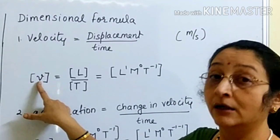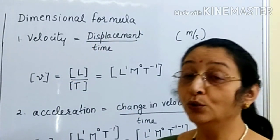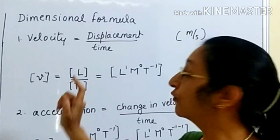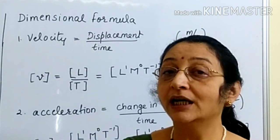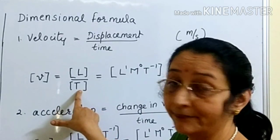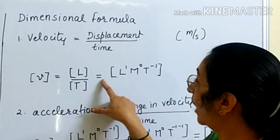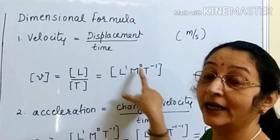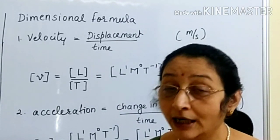In box bracket I will write the symbol for velocity, supposing I write V. This is equal to — for displacement, the unit of displacement is meter and the unit for time is second. So in box bracket we write L upon, in box bracket we write T. So displacement upon time we have represented in box bracket. I take T to the numerator, so I get L to the power 1, M to the power 0, and T to the power minus 1.